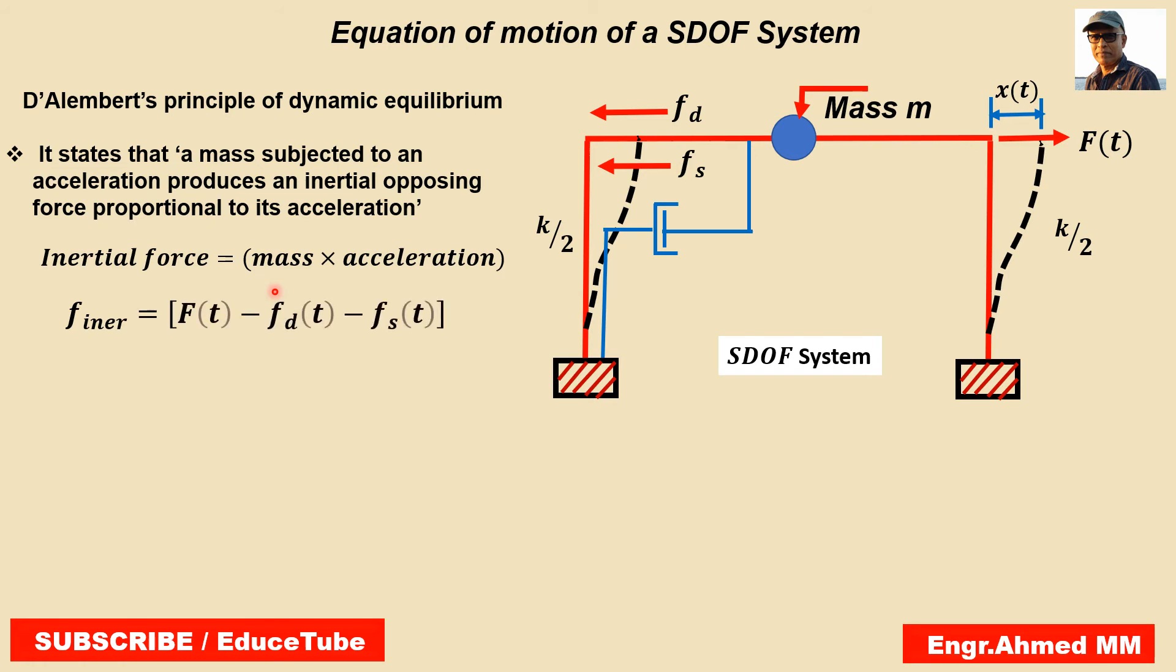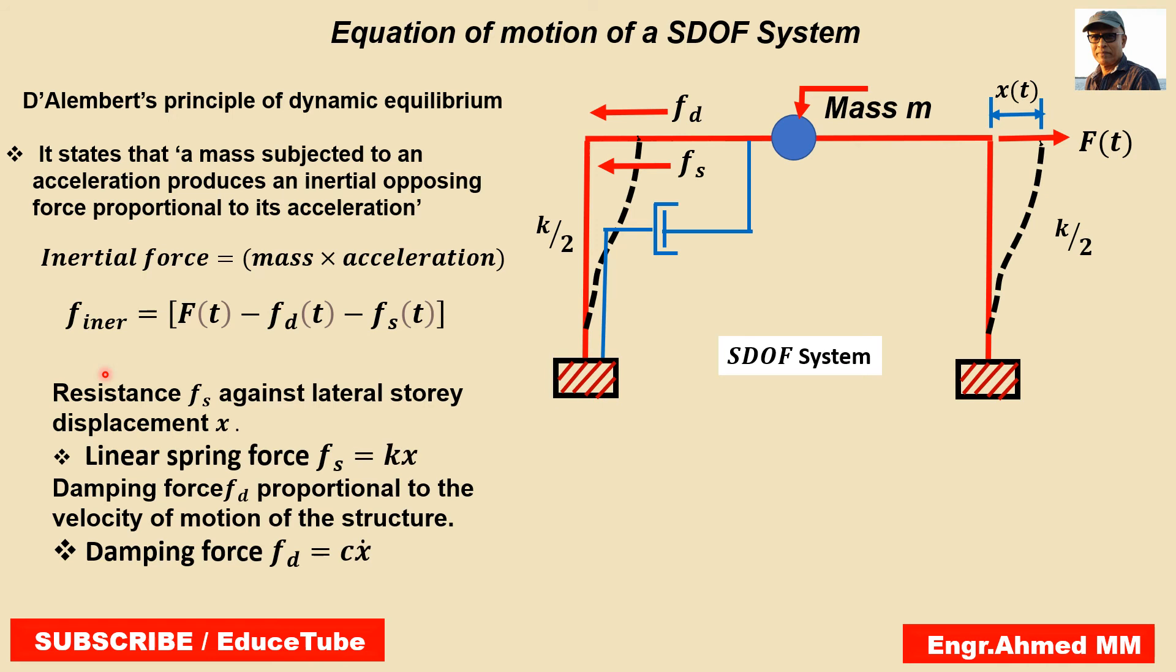We can write our equation F inertia equal to mass times acceleration. Now we have to write about the resistance Fs against lateral storage displacement X. The lateral stiffness of the column provides resistance Fs against lateral storage displacement X. Thus it represents a linear spring force Fs equal to Kx.